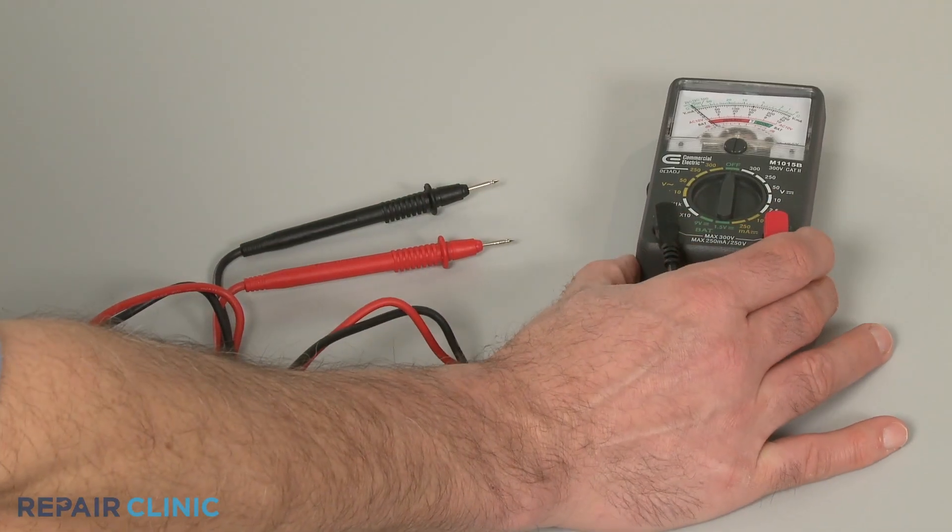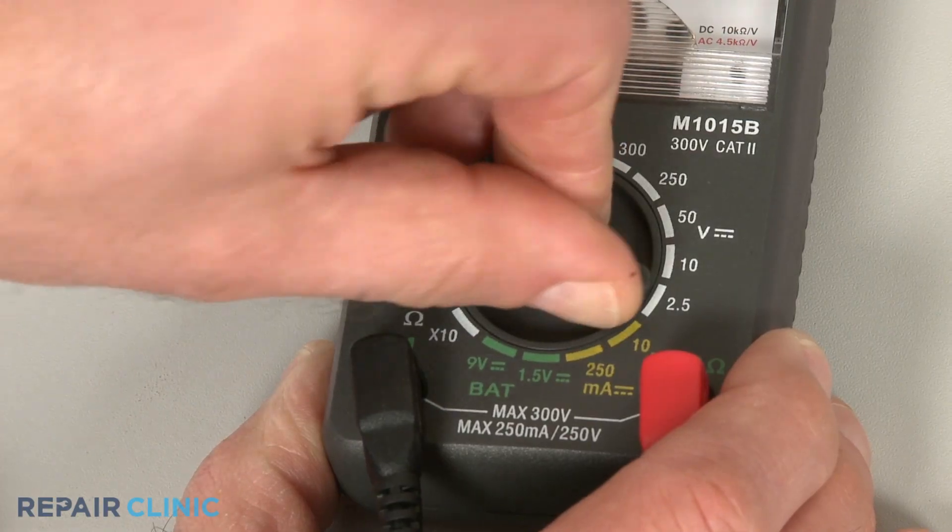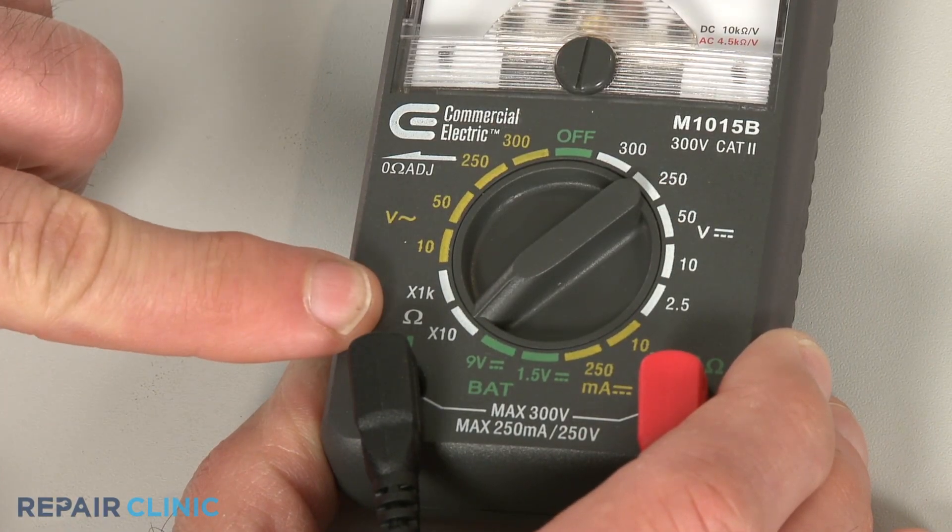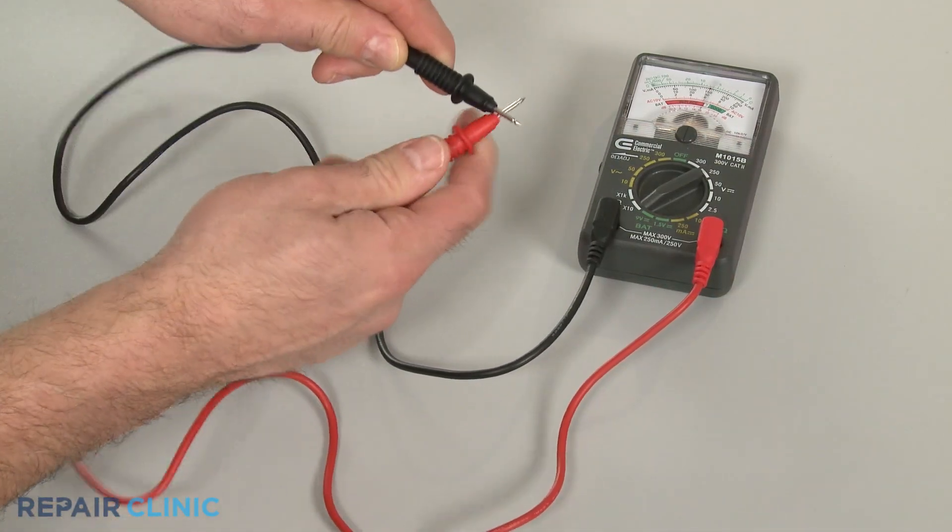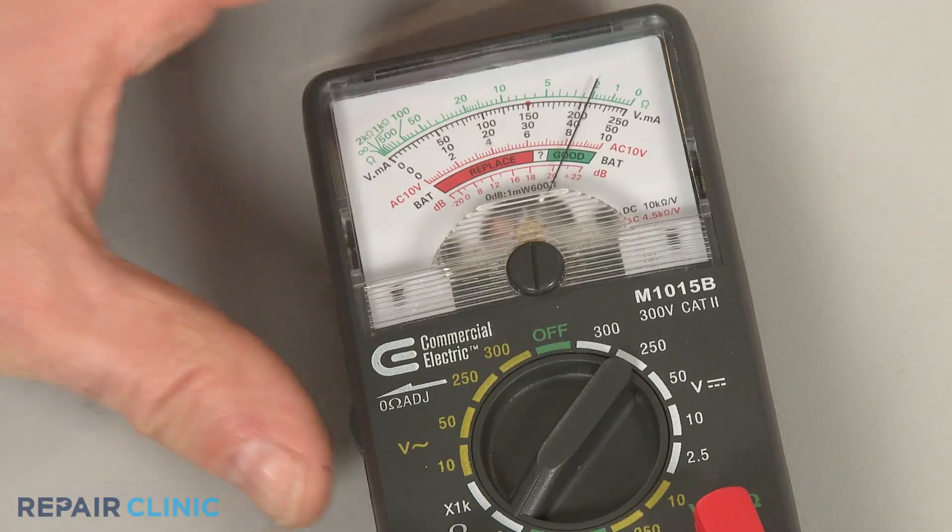When using an analog model, first rotate the range selection dial to the lowest setting for ohms of resistance. Then calibrate the meter by pinching the probes together while adjusting the needle to read zero.